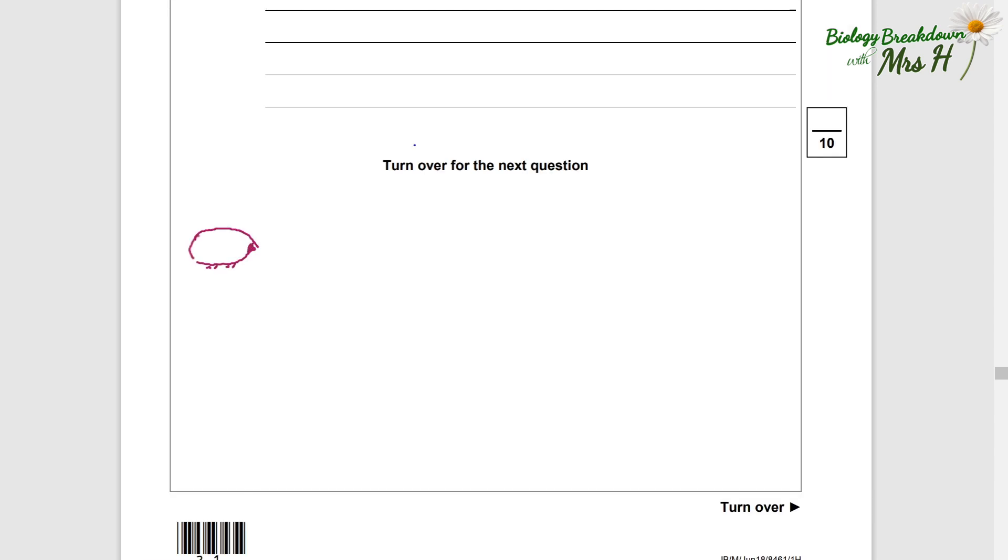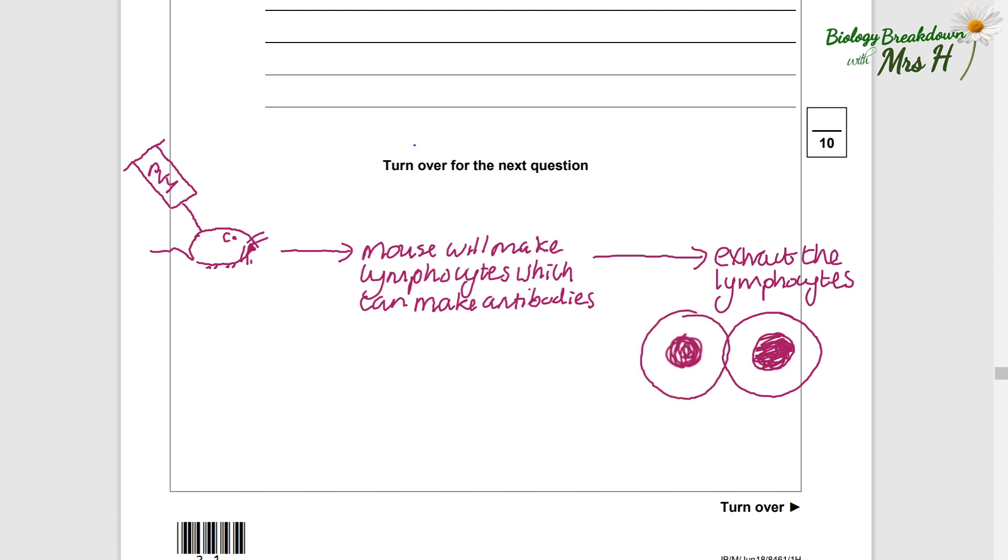So here is our mouse. And if we inject the mouse with PVY proteins, the mouse is going to have an immune response to that because that is antigenic to the mouse, it shouldn't be in the mouse. It will make phagocytes, it will make lymphocytes, there'll be antibodies. But we need to extract the lymphocytes from the mouse.